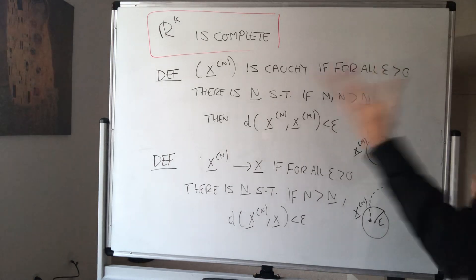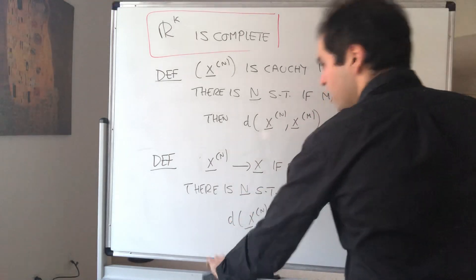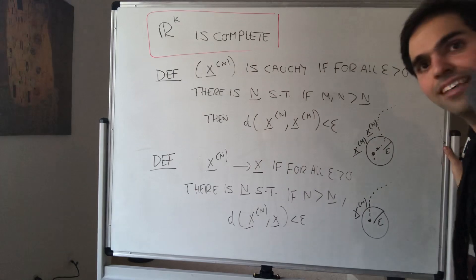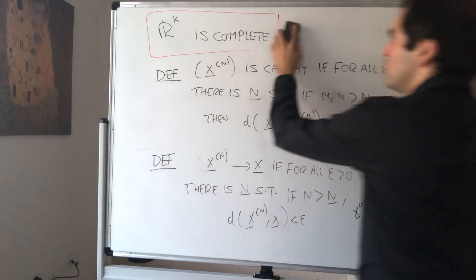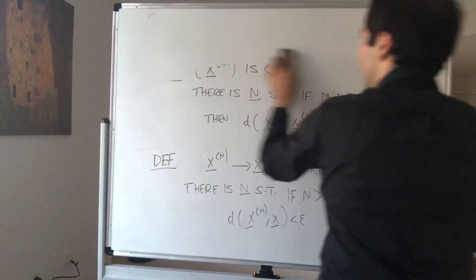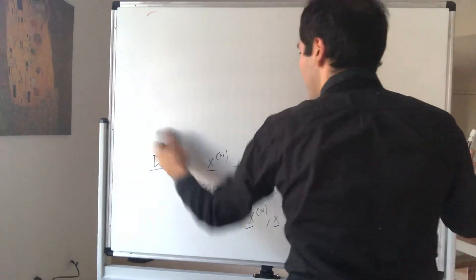And there's also the beautiful thing in R^n which I've shown last time for convergence, but it's also true for Cauchy. So fact, and this is what will help us now.